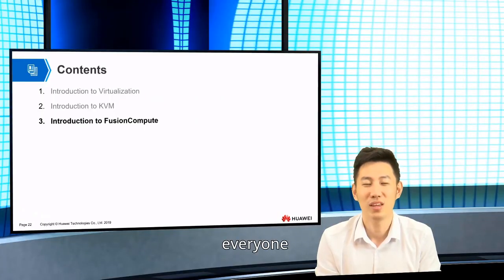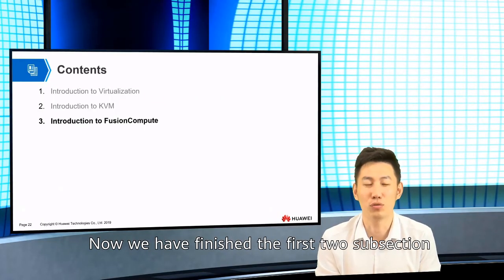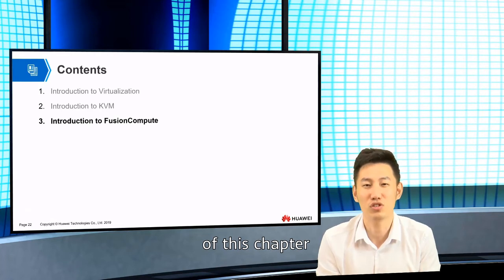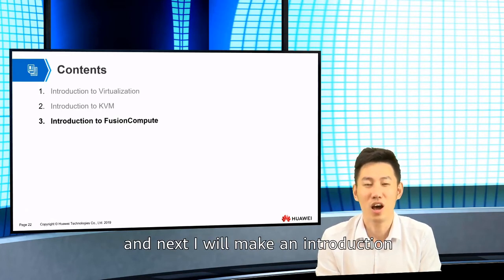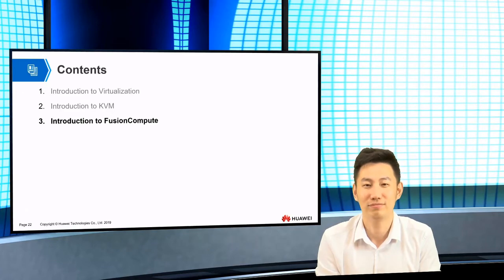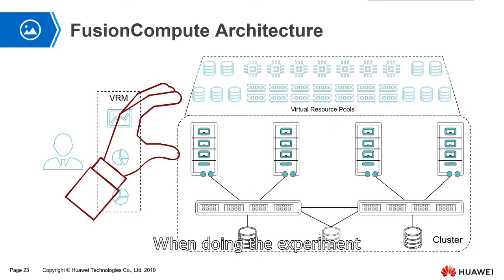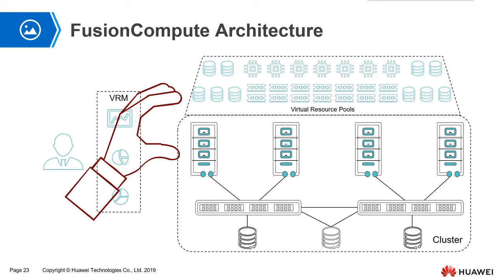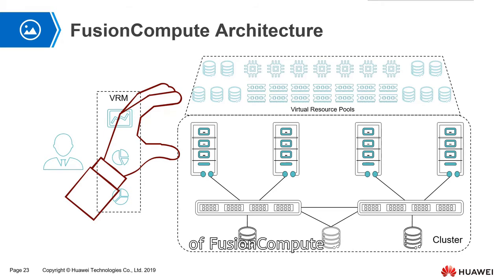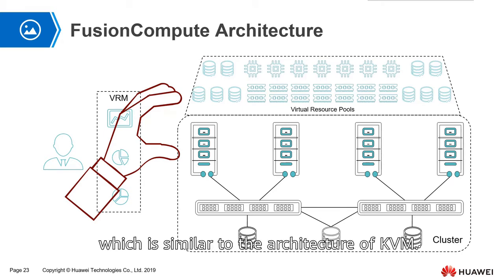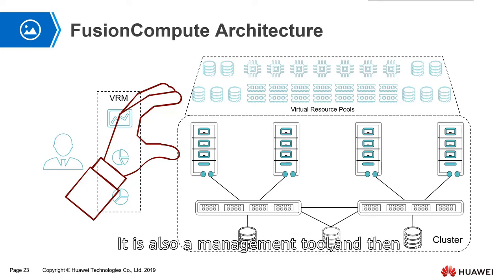Okay everyone, we have finished the first two subsections of this chapter. Next, I will make an introduction to Fusion Compute. When doing the experiment, we use Fusion Compute as a carrier. Let's take a look at the architecture of Fusion Compute, which is similar to the architecture of KVM — it also has a management tool and a virtualization product.